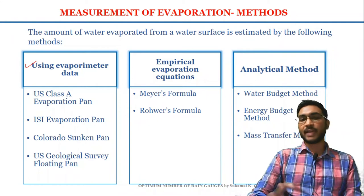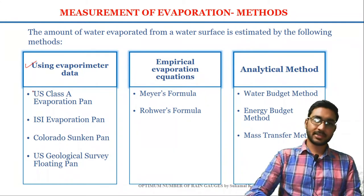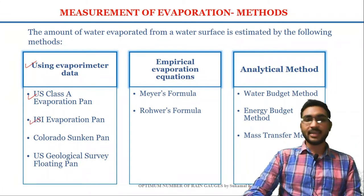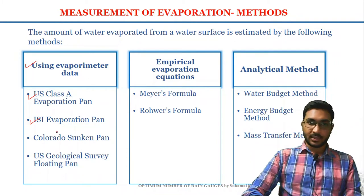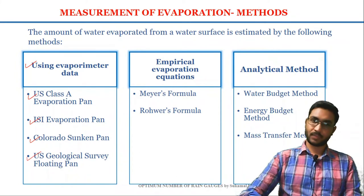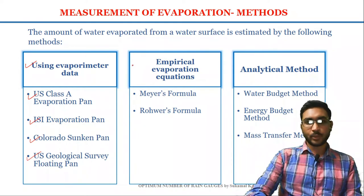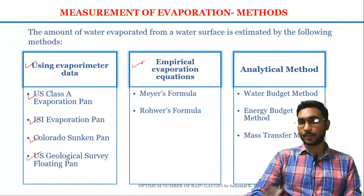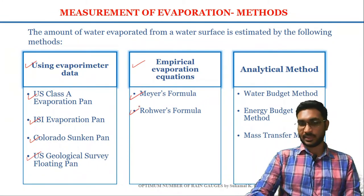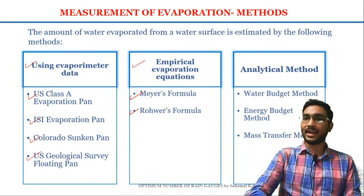There are commonly four types of pan evaporometers. The first one is the US Class A evaporation pan. The second one is the ISI evaporation pan, which is also called the modified Class A evaporation pan. The third one is the Colorado sunken pan, and the fourth is the US Geological Survey float pan, also known as the USGS floating pan. If we use empirical equations for evaporation measurement, we can use Meyer's formula and Rohwer's formula. Apart from these two methods, we also have analytical methods.